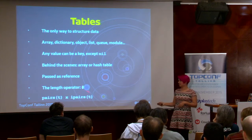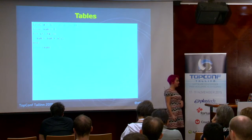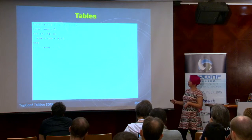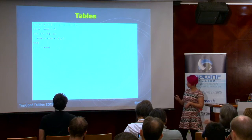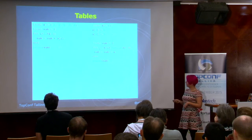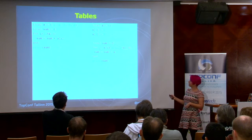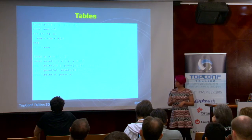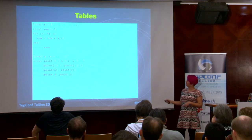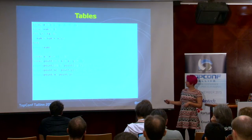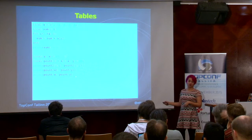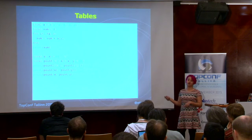Tables are always passed by reference, so no hidden copies happen in the background. There's a length operator, but it only measures the array part, so use it carefully. You can iterate through a table with the function pairs — which iterates everything — or ipairs for the integer array part, which is more efficient but specific to that case. You can create a table with curly braces, index with square brackets, and iterate with ipairs.